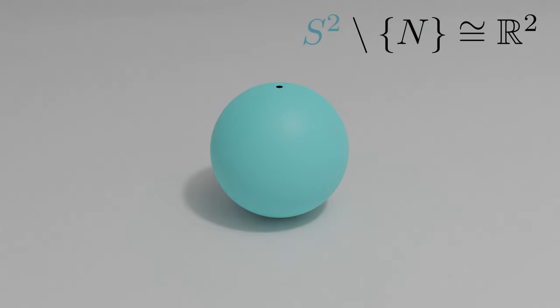Also, in terms of sets, it's technically a singleton containing the north pole that we're removing from the sphere, not just a point. A singleton is a set containing one element, denoted by curly brackets around the element.